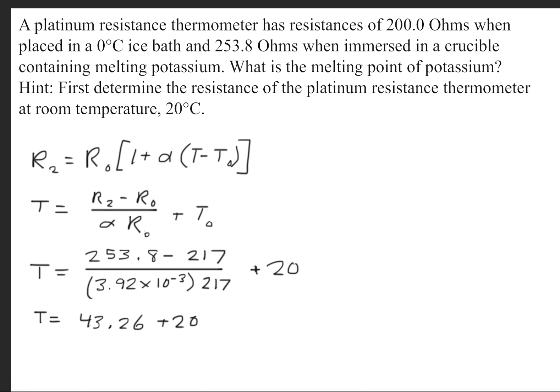Instead of doing R sub 1, we'll have R sub 2 is equal to R0 times 1 plus alpha times T minus T0.